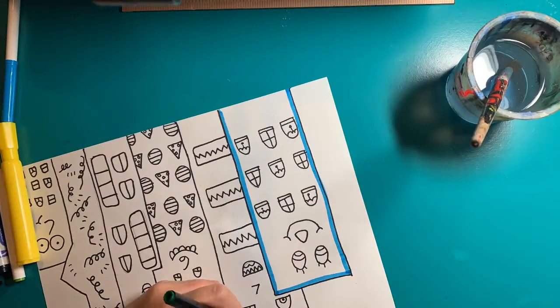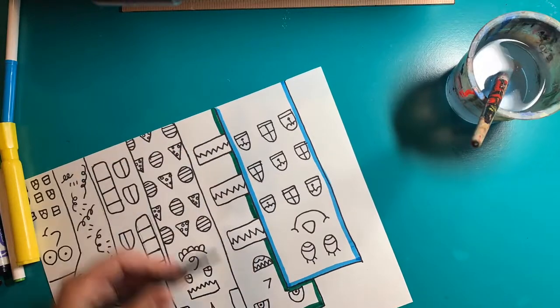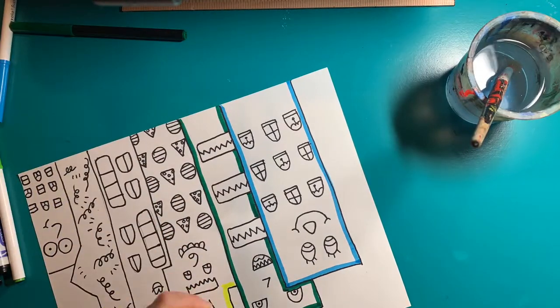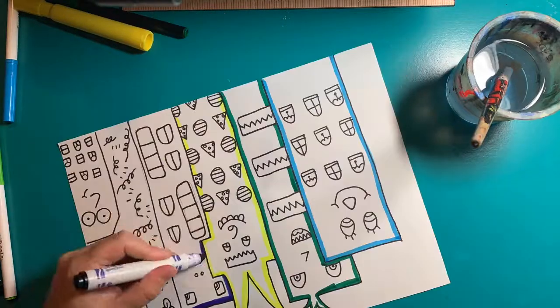First you'll need some washable markers. It's important that they're washable and not permanent. Then you need a cup with water and a paintbrush.